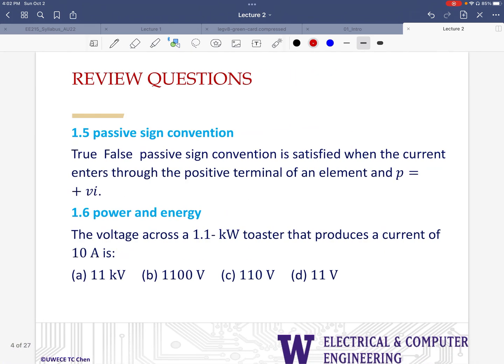Moving on, this is relating to the passive sign convention. True or false, the question is: passive sign convention is satisfied when the current enters through the positive terminal of an element and the power is computed as positive V times I, voltage across it multiplied by the current through it.